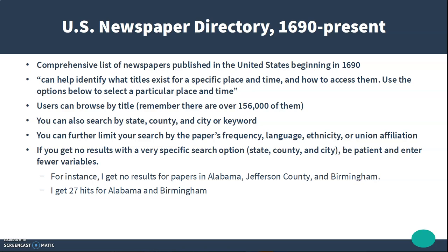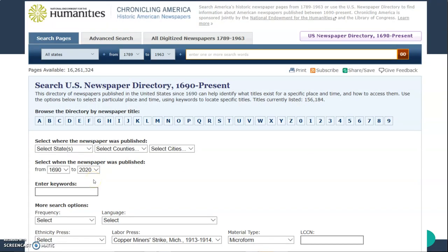You can limit your search by the newspaper's frequency, language, ethnicity, or union affiliation. If you get no results with a very specific search — say you're doing a state, county, and city search — be patient and enter fewer variables. For example, I searched for Birmingham newspapers using Alabama, Jefferson County, and Birmingham and got no results. So I did a less specific search using just Alabama and Birmingham without Jefferson County, and I got 27 hits. Here's what the search screen looks like — you can search by title or choose your location, keyword, and several other options.